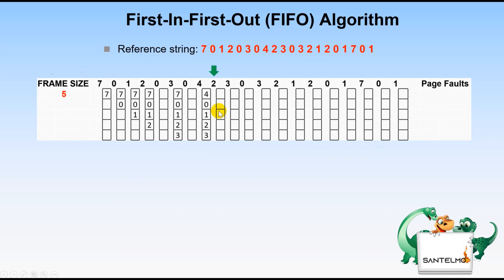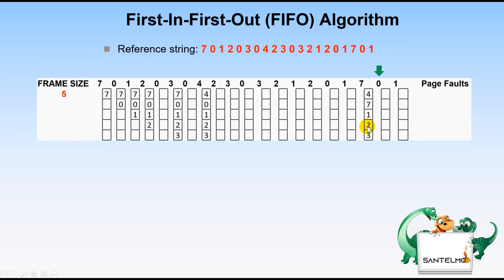Allocate 2 — already allocated. Allocate 3 — already allocated. Allocate 0 — already allocated. Allocate 3 — allocated. Allocate 2 — allocated. Allocate 2 — allocated. Allocate 0 — allocated. Allocate 1 — allocated. Now allocate 7 — no free frame, victim is 0 (first in among 4, 0, 1, 2, 3). Replacing 0 with 7 yields 4, 7, 1, 2, 3.